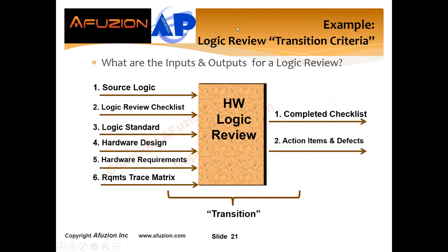A logic review: we don't just hold the logic and say it feels right. Hardware logic reviews require engineers to use all six inputs: logic, checklist, standard, the actual design, the hardware requirements, and the trace matrix identifying which requirements apply. We use those six inputs, all under configuration control, to complete the corresponding checklist. If you need a sample checklist just contact AFusion. You also need to identify action items and defects — that's the transition. Engineers follow the transition; process assurance confirms it via audits.